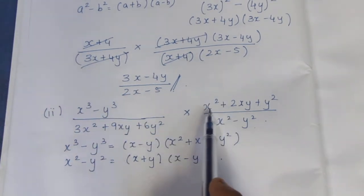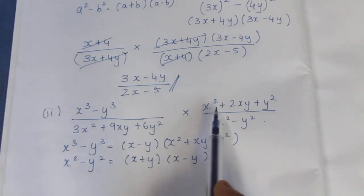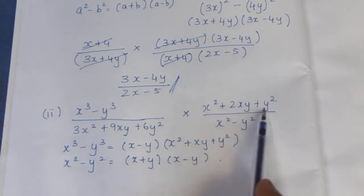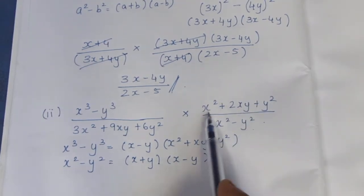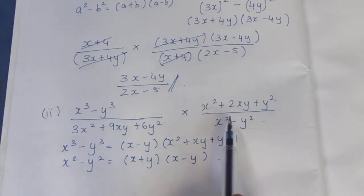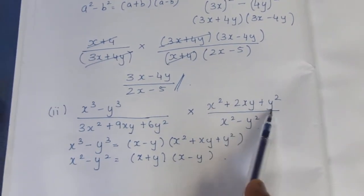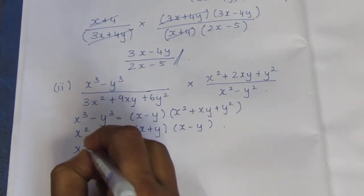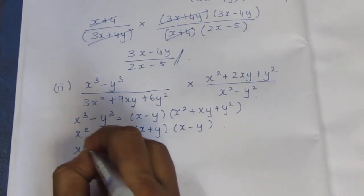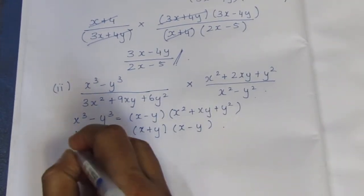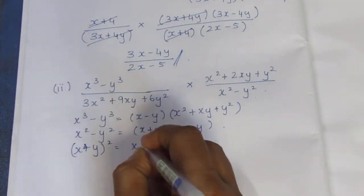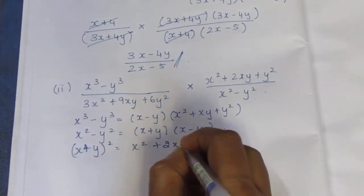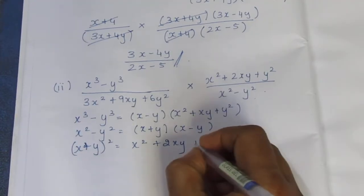Look at this. The a plus b whole square formula is a square plus 2ab plus b square. So x square plus 2xy plus y square equals (x plus y) whole square, which is (x plus y) into (x plus y).